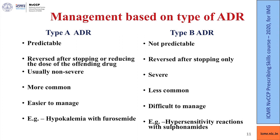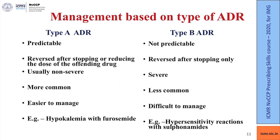Type B reactions are bizarre or unpredictable and are difficult to prevent. However, a careful drug history can help prevent them to some extent. These reactions may vary from a mild rash to more severe types like Stevens-Johnson syndrome. Fortunately they are less common, but they are more difficult to manage with significant morbidity and mortality. Hypersensitivity reactions to sulfonamides, nonsteroidal anti-inflammatory drugs, and penicillins are the common types of type B adverse drug reactions encountered in clinical practice.